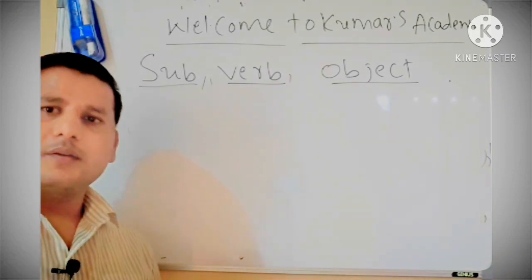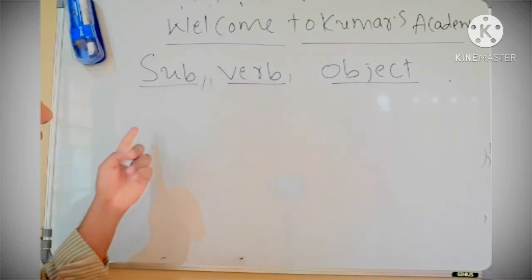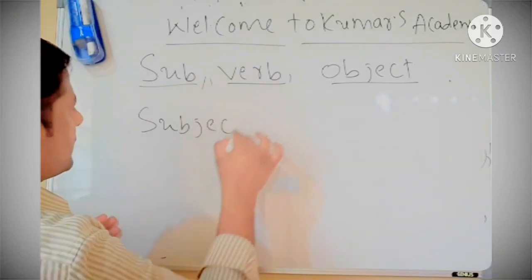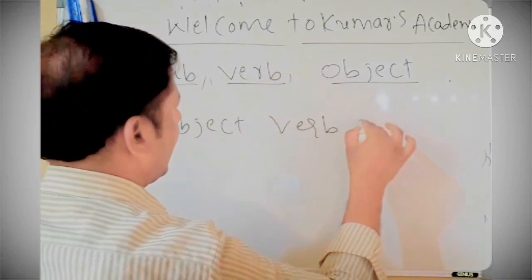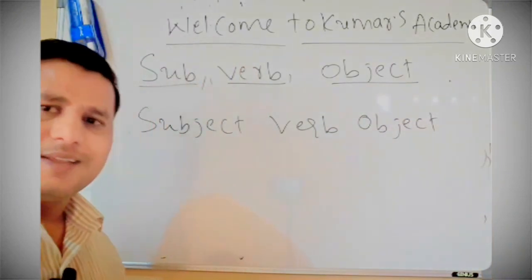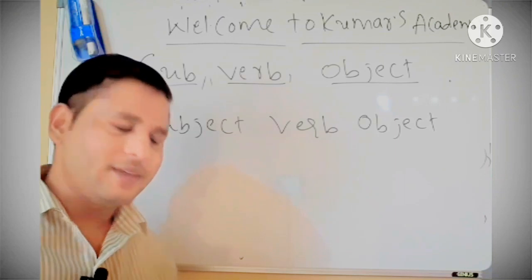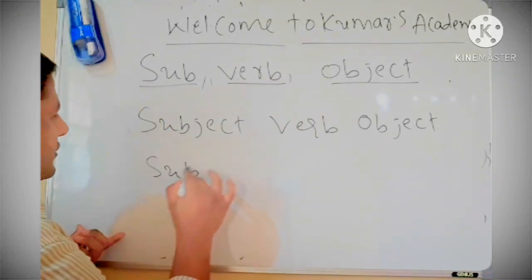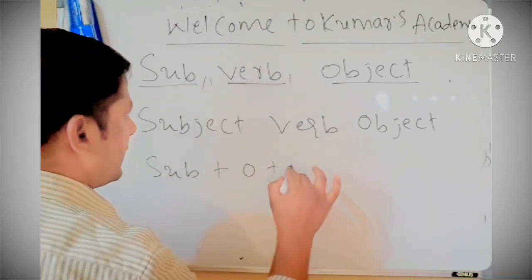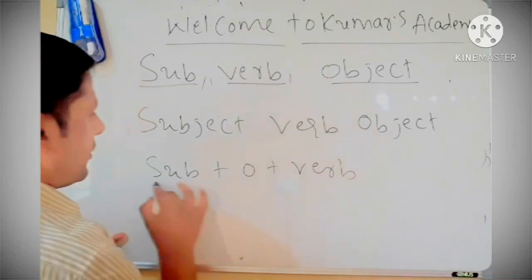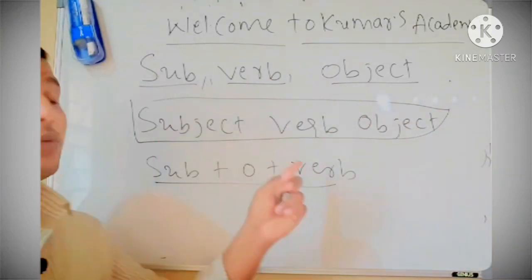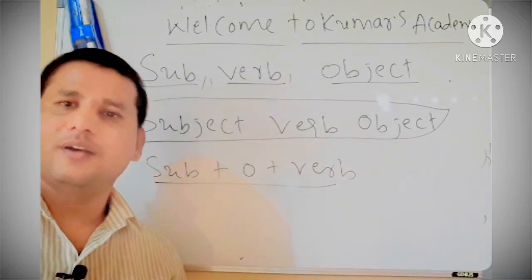Most of English begins with the subject, verb and object pattern. But Indian languages are not like that. In Indian languages, there is subject first, next there is an object, next there is a verb. But English has a standard formula like this. If you know this formula, if you know about subject, verb and object, definitely you will learn English.